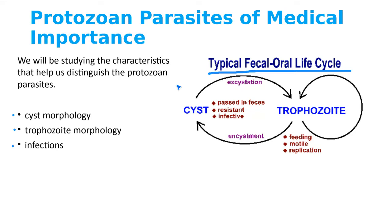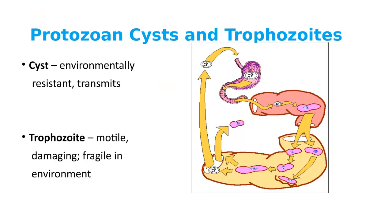The cyst gets into the body, passes through the stomach acid which weakens it, then it breaks apart and becomes a trophozoite that causes the infection. Some trophozoites then become a cyst, which is released to the outside of the body. Cyst in, cyst out — and therefore the life cycle continues.